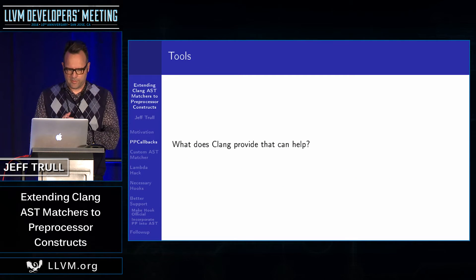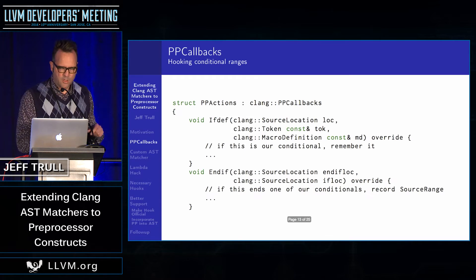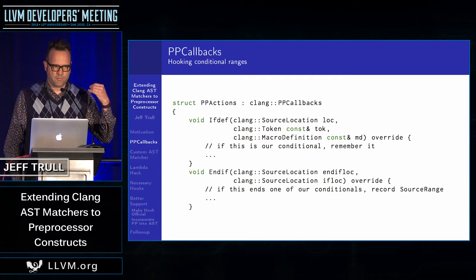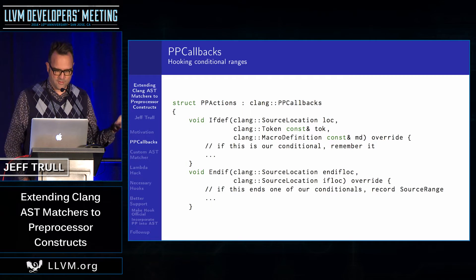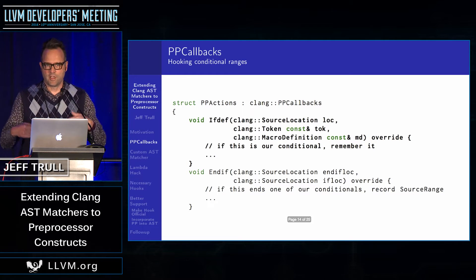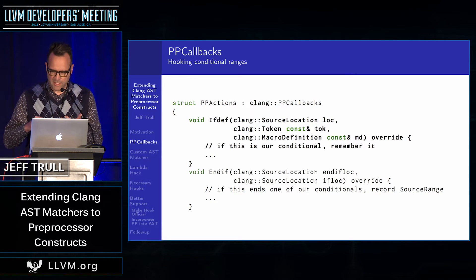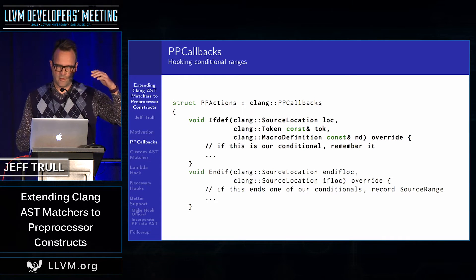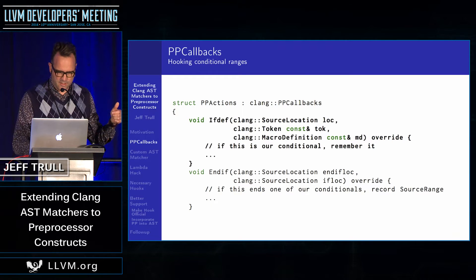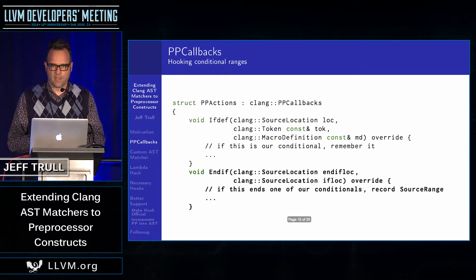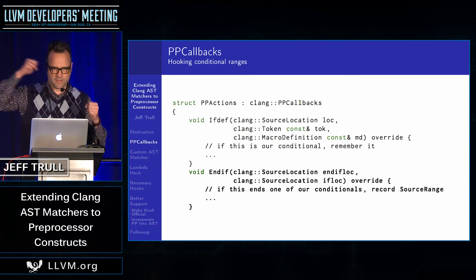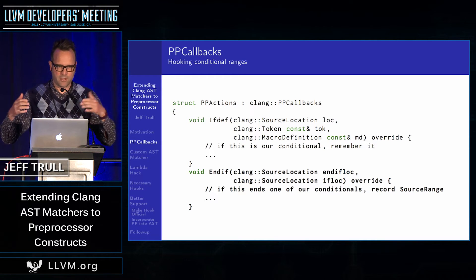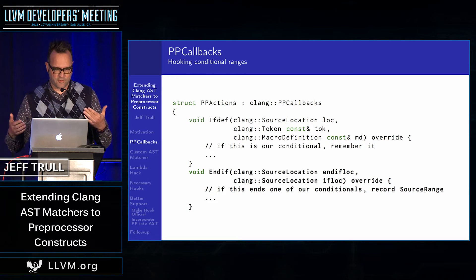Clang can help us with this. When trying to recognize the conditional regions in the source code, there are some callbacks you can register with the preprocessor which will tell you, for example, once you hit an ifdef, you can look and see if this is the macro you were interested in or not. Then you can record the location that that ifdef was at, and later on when you encounter a matching endif, you can see if it's the right one and store that as a source range, so you can go back later and try to match against those source ranges.